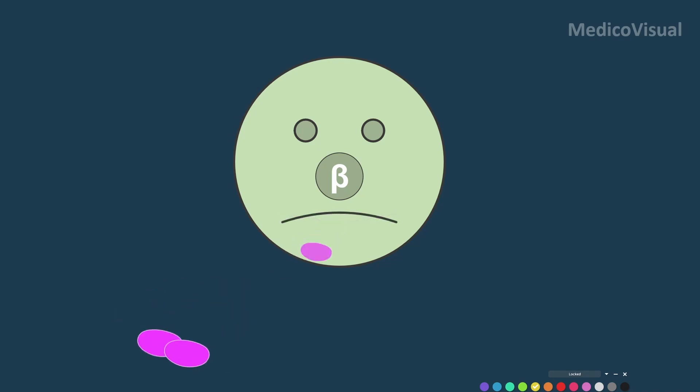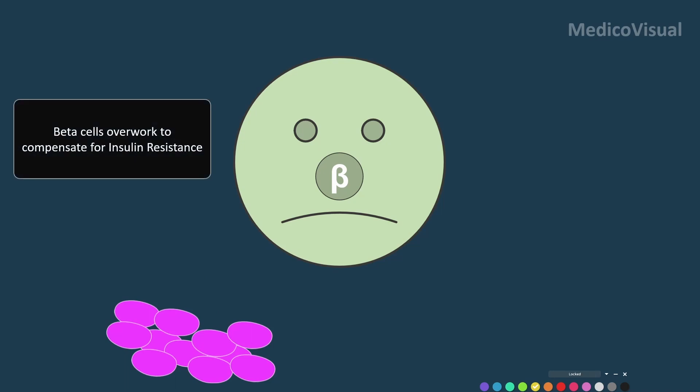and it will secrete lots and lots of insulin in very little time. Beta cells will overwork to compensate for insulin resistance, and fortunately, initially, they actually become successful in compensating.